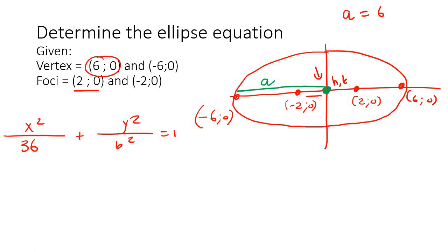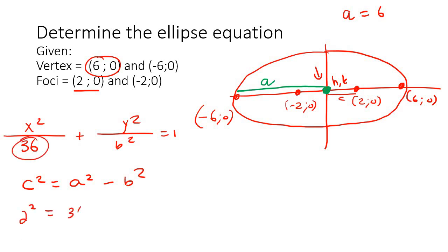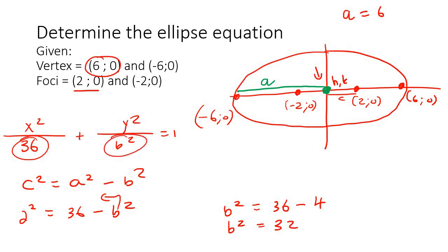The foci value is 2, and we know there's a formula for the foci: c squared equals a squared minus b squared. The length from center to focus is c, so c equals 2. Therefore, 2 squared equals 36 minus b squared, giving us 4 equals 36 minus b squared. Solving for b squared gives us 32. We can fill that in, and that is the answer for the first example.